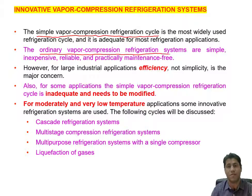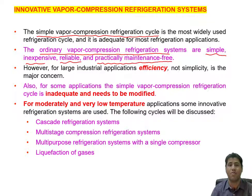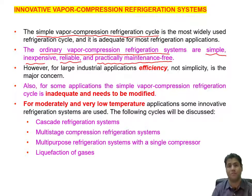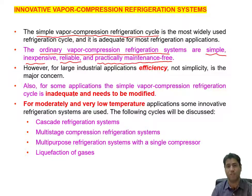An ordinary vapor compression refrigeration system is simple, inexpensive, reliable, and practically maintenance-free. For example, the warranty period for a refrigerator is very long — sometimes more than 10 years for the compressor, or more than two or three years for the full refrigerator.